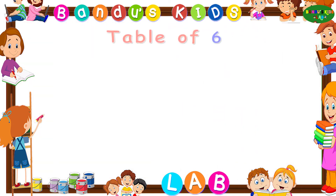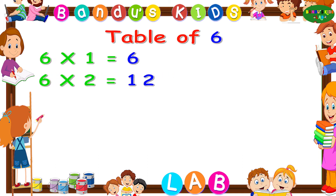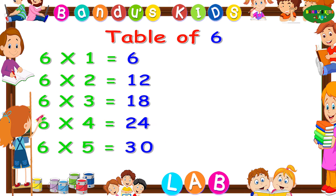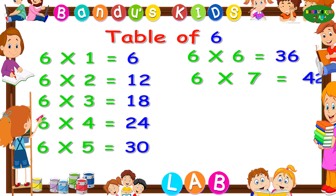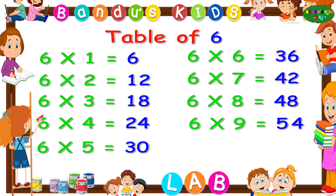Now let's revise the table of six one more time. Six ones are 6, six twos are 12, six threes are 18, six fours are 24, six fives are 30, six sixes are 36, six sevens are 42, six eights are 48, six nines are 54, six tens are 60.